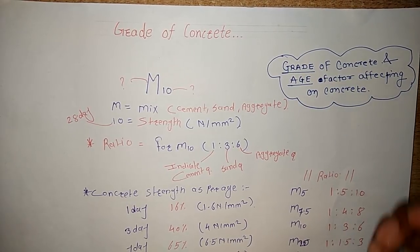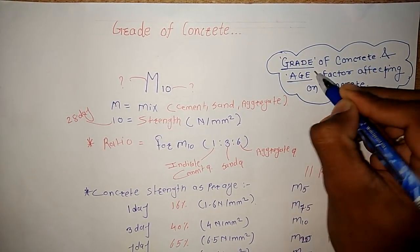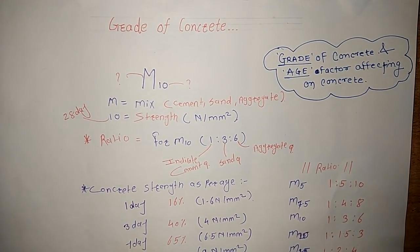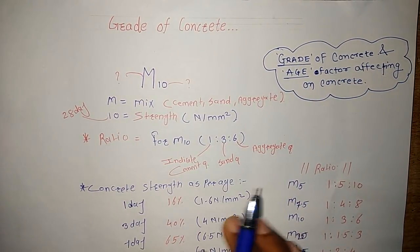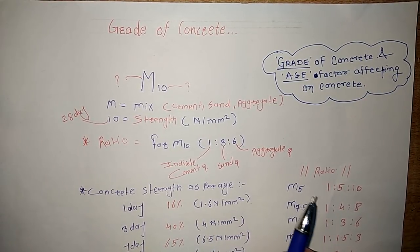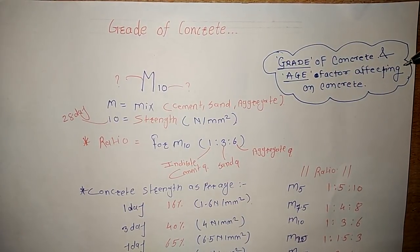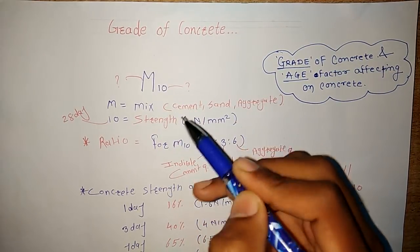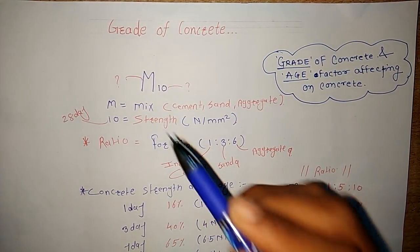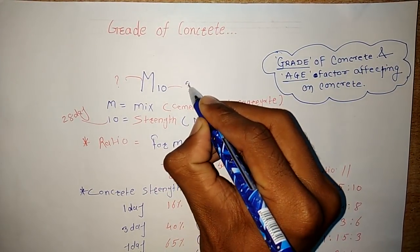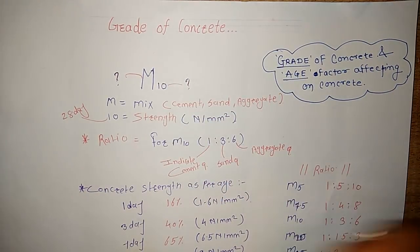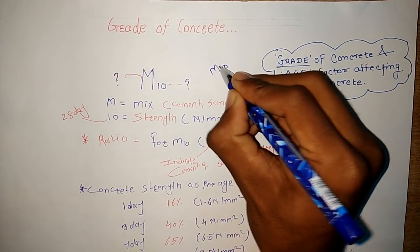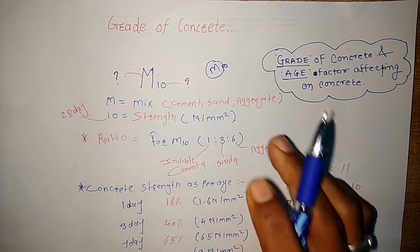Today we are going to discuss two new points related to concrete. First is the grade of concrete — what are the types and grades of concrete. Different grades are given in the IS code. Second is the H factor — how the H factor of concrete depends on strength. First, it is important to know: in many books and colleges we see grades like M10, M20, M15. What is M and what is 10? This is very important and is asked in interviews, government exams, and companies like L&T.